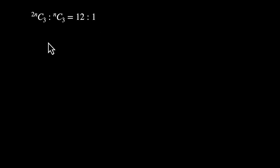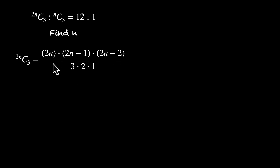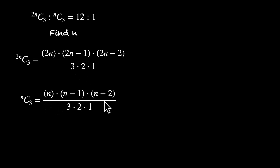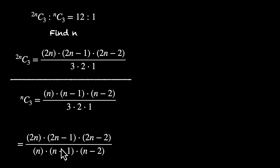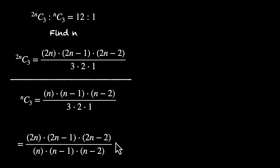Let's solve another problem: 2nC3 to nC3 equals 12 to 1. We need to find the value of n. 2nC3 has three terms in the numerator and three in the denominator: 2n times (2n-1) times (2n-2) divided by 3×2×1. nC3 is n times (n-1) times (n-2) divided by 3×2×1. Finding the ratio, the 3×2×1 cancels out, leaving 2n, (2n-1), (2n-2) in the numerator and n, (n-1), (n-2) in the denominator.